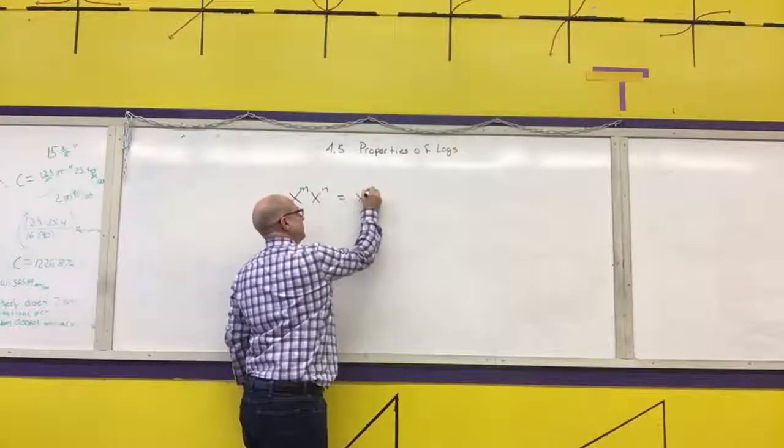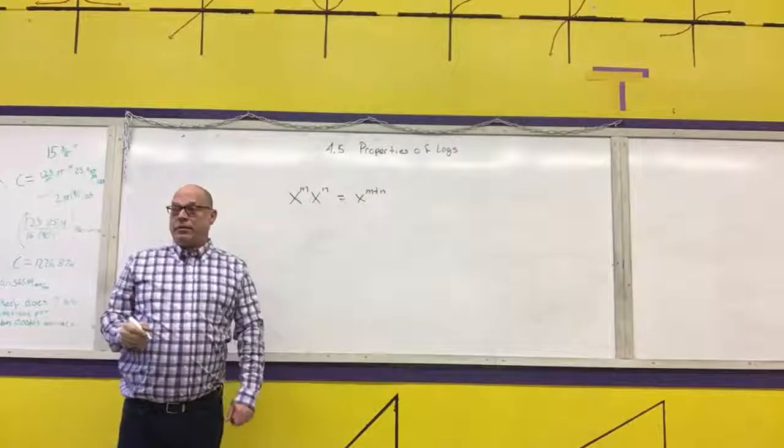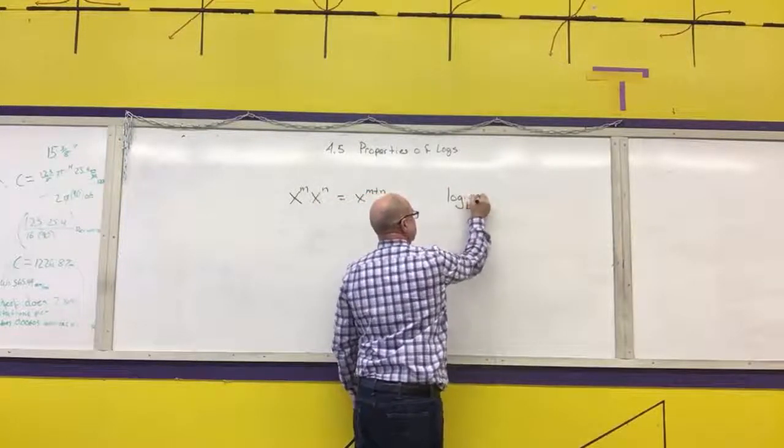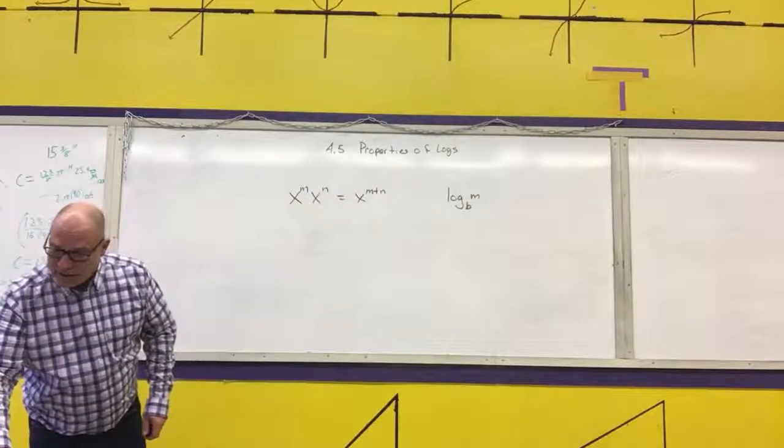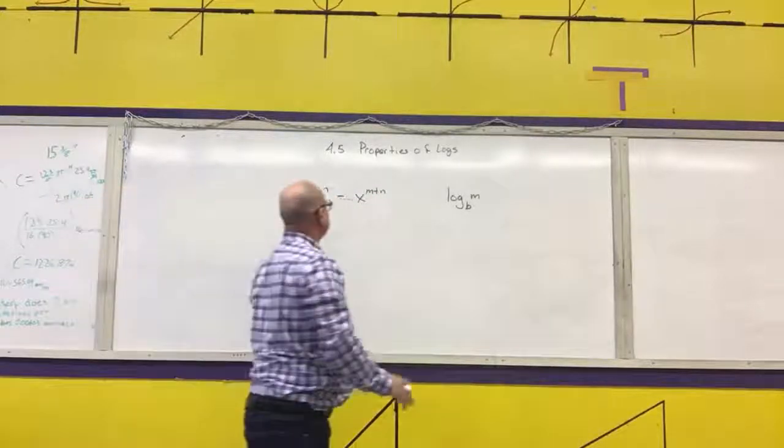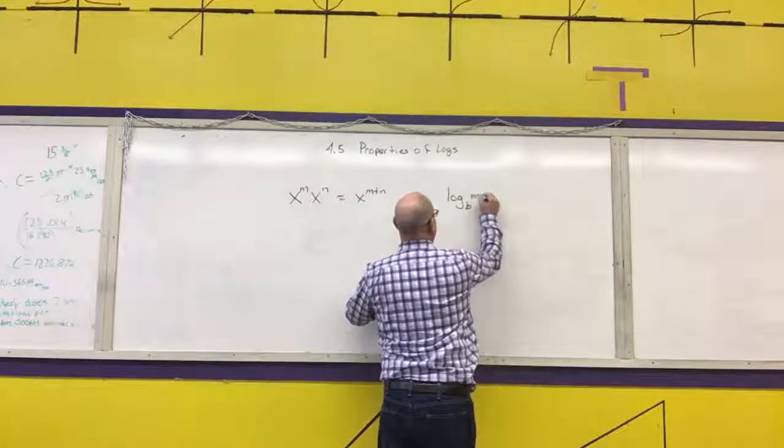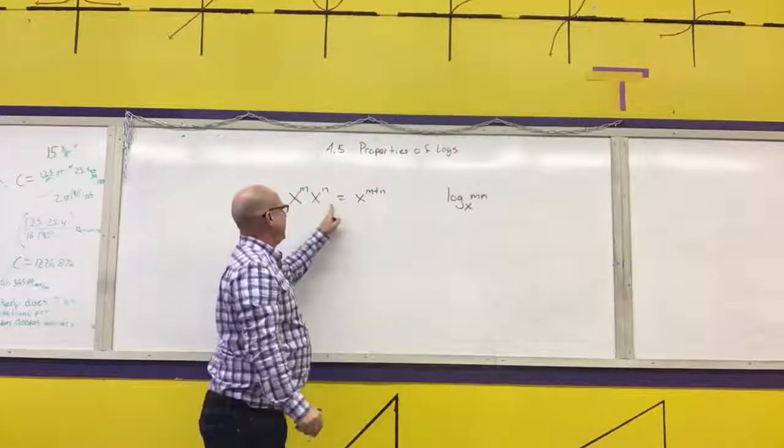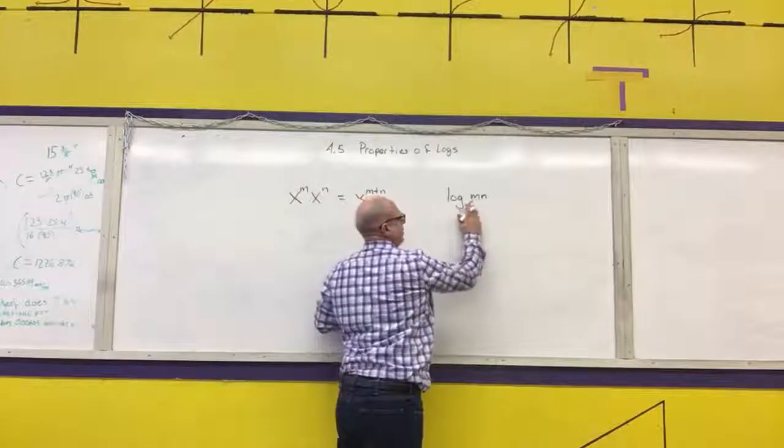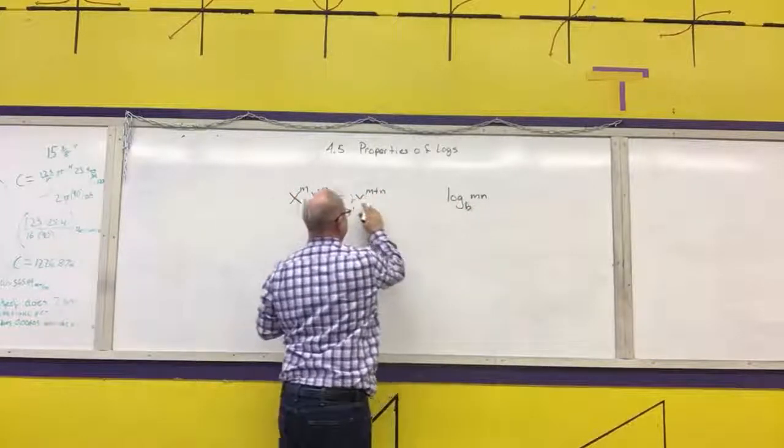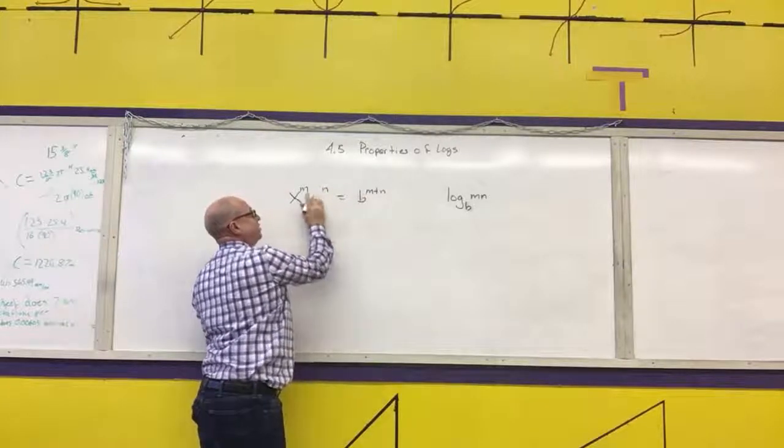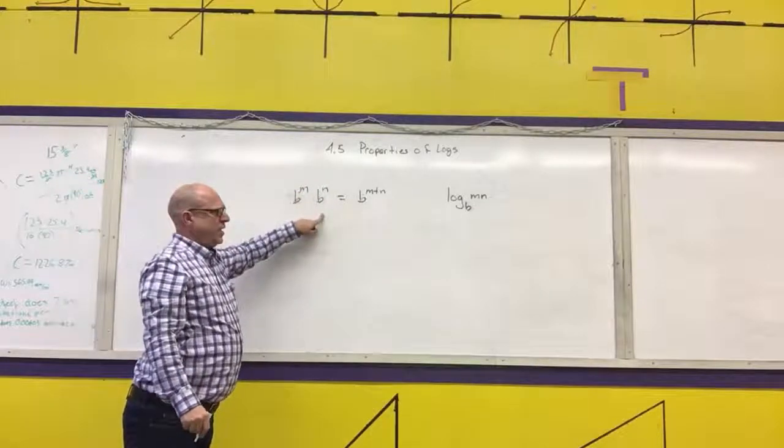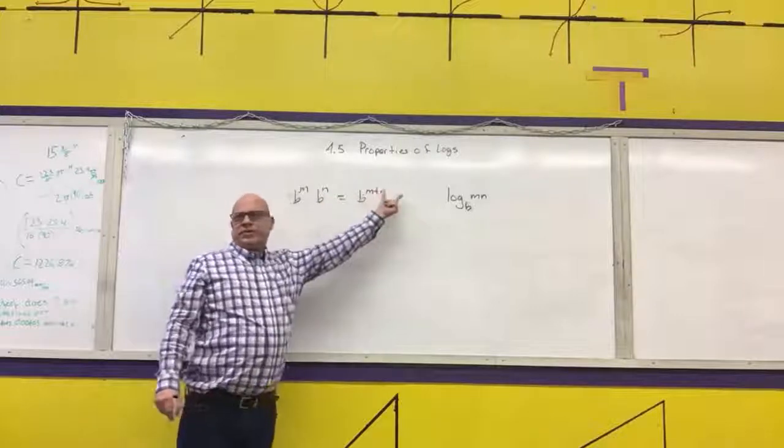Okay. X to the M times N, that's what we do. So, it's X to the M plus N. I'm actually going to change this from X's to B's, because we always use this as the base of the logarithm. I have a base to a power times a base to a power equals a base to the sum of the powers.